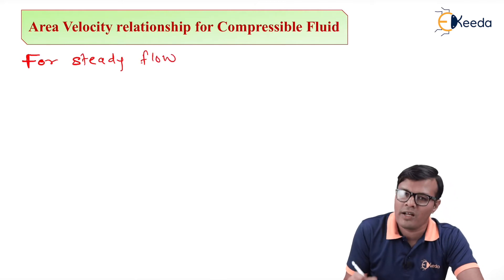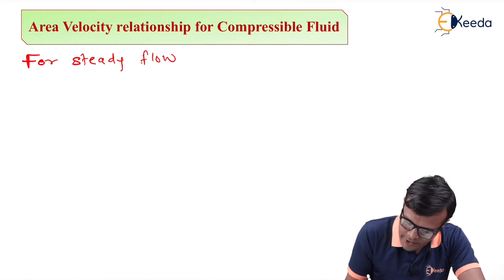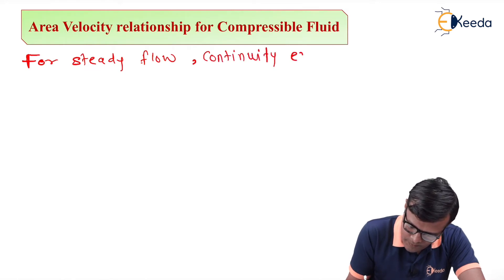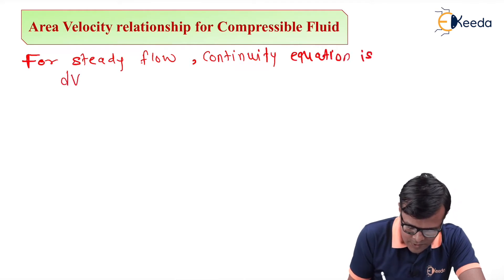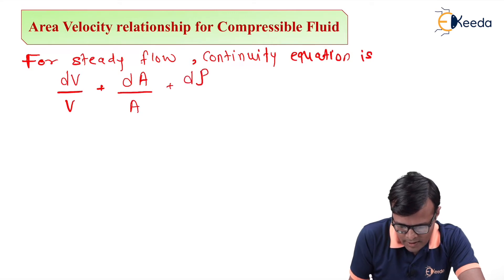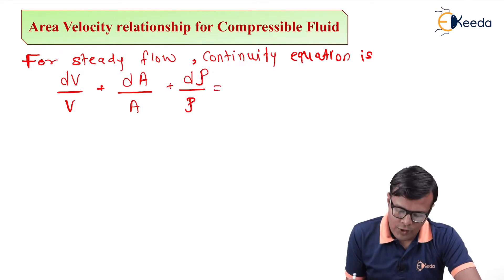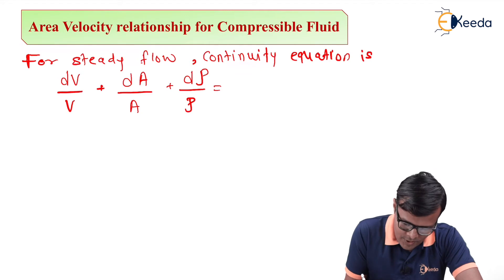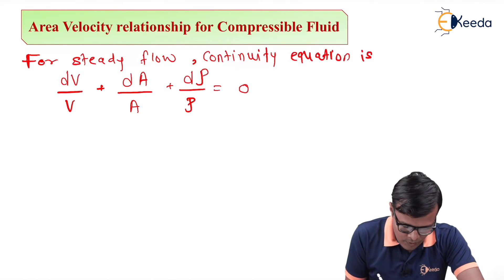For steady flow, discharge is constant, meaning ρ·A·V is constant. The continuity equation accounts for change in velocity, change in area, and change in density at different sections — the total change becomes zero. This is the continuity equation for compressible flows.